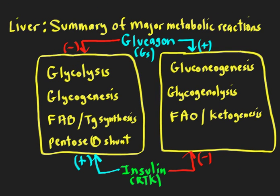This general summary diagram shows the major reactions. Gluconeogenesis, glycogenolysis, fatty acid oxidation, and ketogenesis are all grouped on the right side, and their counterparts are on the left: glycolysis, glycogen synthesis, and fatty acid synthesis. There are also triglyceride synthesis and the pentose phosphate shunt on the left panel. Importantly, when one group is turned on, all the other reactions are turned off, and vice versa.